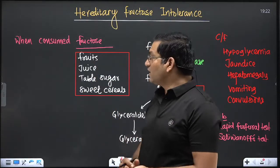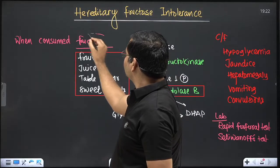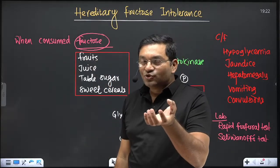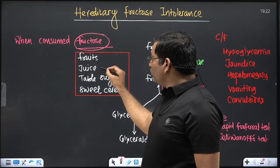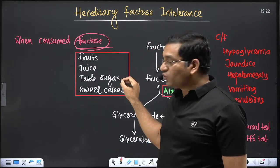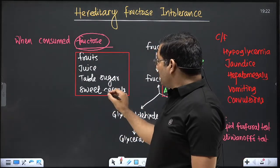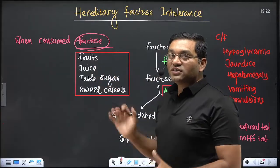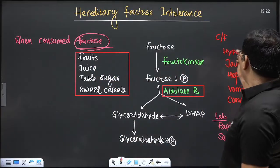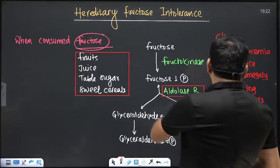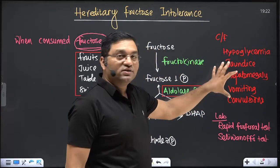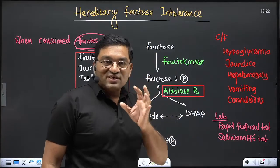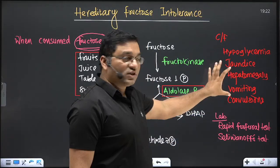The condition is asymptomatic, but when a fructose-rich diet is consumed — in the form of fruits, fruit juices, table sugar (sucrose, which is glucose plus fructose), and sweetened cereals — it causes symptoms including hypoglycemia, jaundice, hepatomegaly, vomiting, and convulsions.